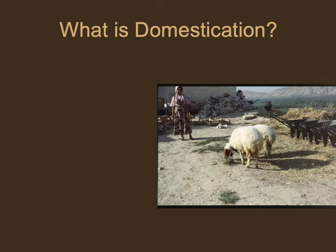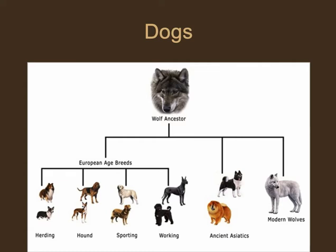If you let these animals free in the wild they wouldn't be able to survive. With some dog breeds — if you took a little corgi and let it free in the woods, it wouldn't survive. Many domesticated dogs are in a symbiotic relationship with humans. Some dogs can live on the street or in the wild and survive, but many are dependent on humans, and we've grown dependent on dogs as well. All of these breeds were produced through human selection.